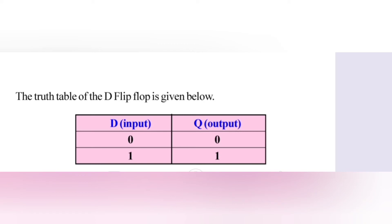After a delay of 1 clock pulse, the output follows the input. That is why it is called the delay flip-flop. The D flip-flop is the basic building block of shift registers, used to memorize data.